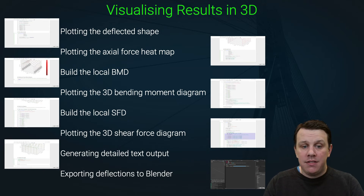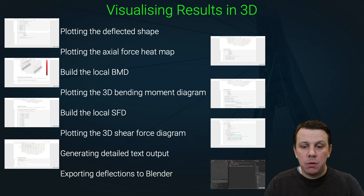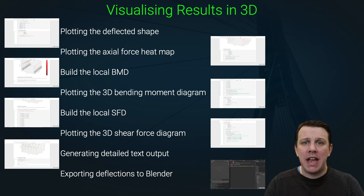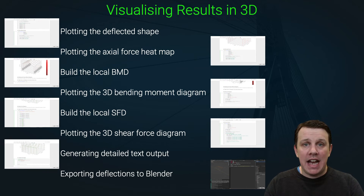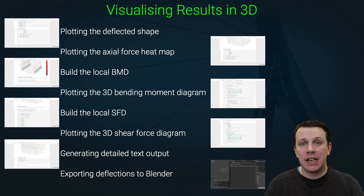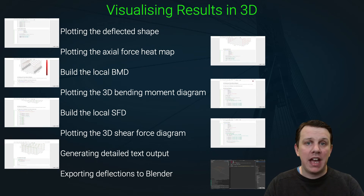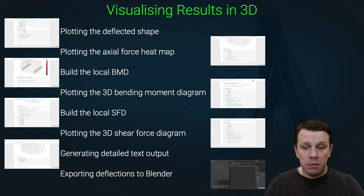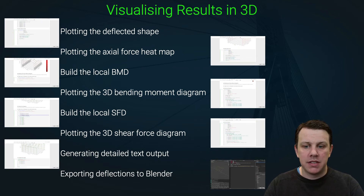That completes all of the data visualizations we need inside our notebook. The next thing we want to implement is a detailed element-by-element text output, which will put all of the data at our fingertips if we really want to take a deep dive and look at exactly what's happening at different elements in our structure — for example, when we can't make out what's happening from our visualizations.